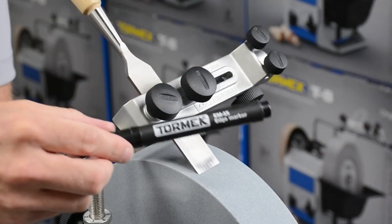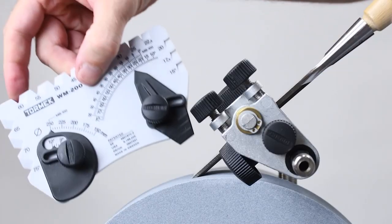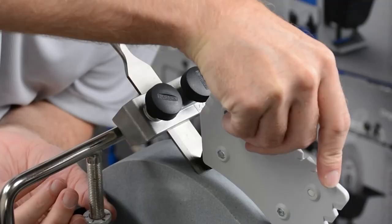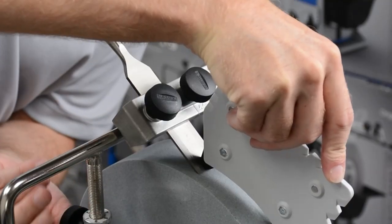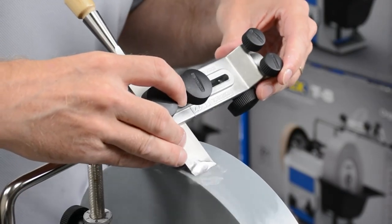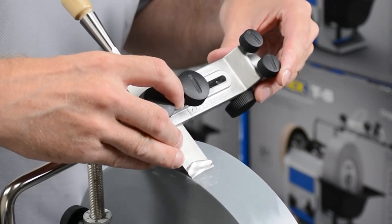Use the marker method or the WM200 Angle Master to set the desired angle. Move side to side covering the entire surface of the grinding wheel.